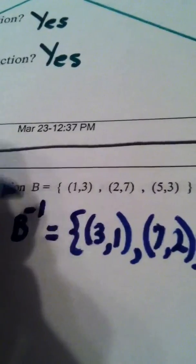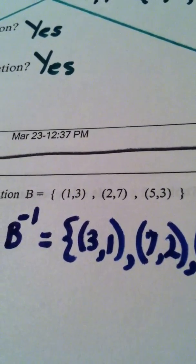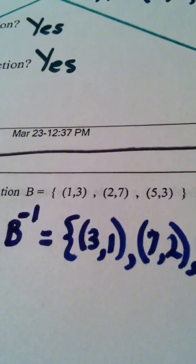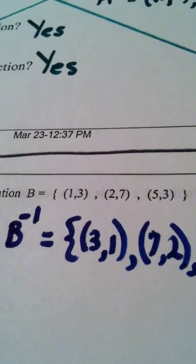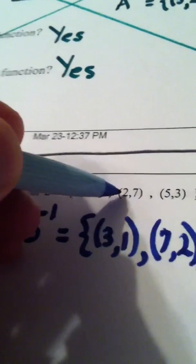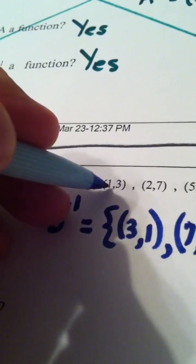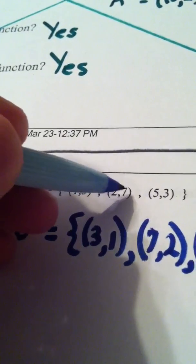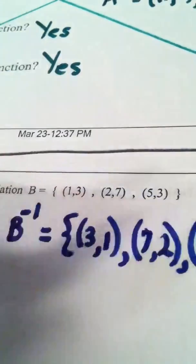Well, let's look. When I look at relation B, to determine if something is a function, you look at the x value and you make sure that it doesn't repeat. In other words, once x chooses a partner, it can't change its mind. 1 never repeats. 2 never repeats. And 5 never repeats. In other words, 1 promised itself to 3 and it kept the promise. 2 promised itself to 7 and it kept the promise. 5 promised itself to 3.